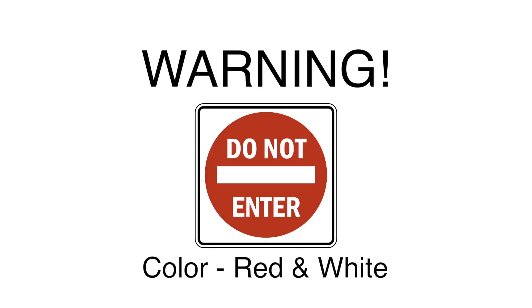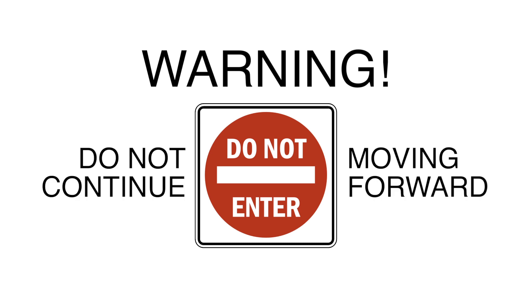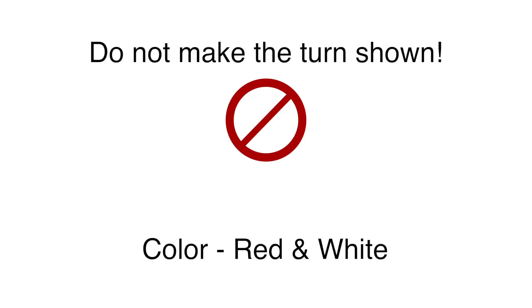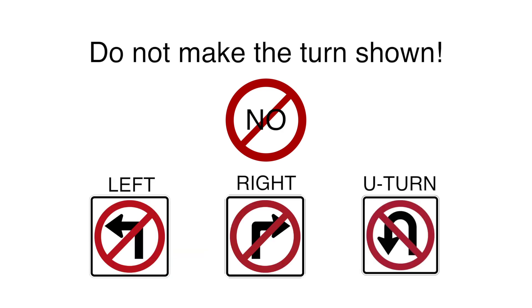Do Not Enter — Square. This sign warns you not to enter a road or freeway. You will see this sign if you are going the wrong way. The signs below prohibit certain actions. When you see a sign with a red circle and a slash mark, it means do not make the turn shown.